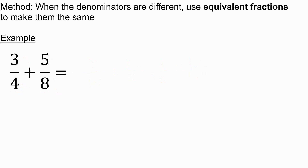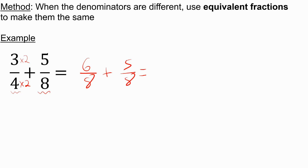If I wanted to do three quarters plus five eighths, the lowest common multiple of four and eight is just eight. So we multiply four by two and three by two for the first fraction, giving me six eighths. Six eighths plus five eighths is obviously going to be eleven eighths. Eight goes into eleven once with remainder three, so the final answer is one and three eighths.